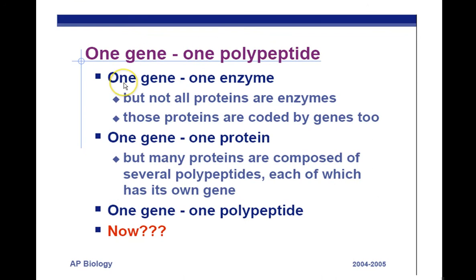If you say one gene, one enzyme, you really can't say that because not all proteins are enzymes, so that doesn't really work. But what about one gene, one protein? Well, many times that's true. For example, insulin protein is coded for by one gene. There's one sequence of DNA that makes the one insulin protein. However, not every protein only consists of one gene. Some things like hemoglobin have four subunits, four polypeptides.